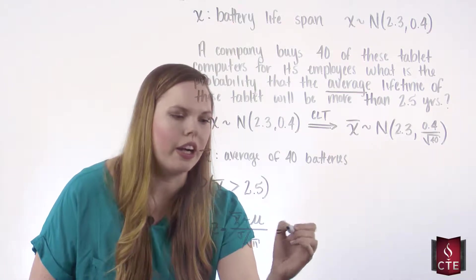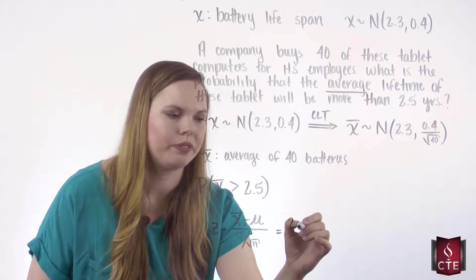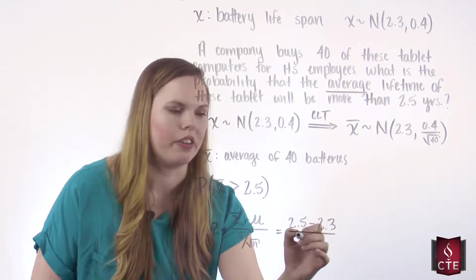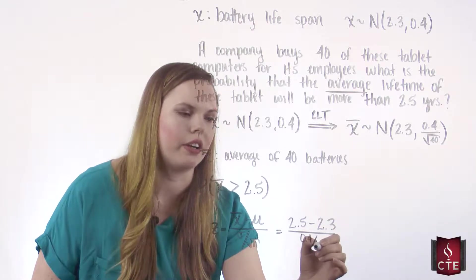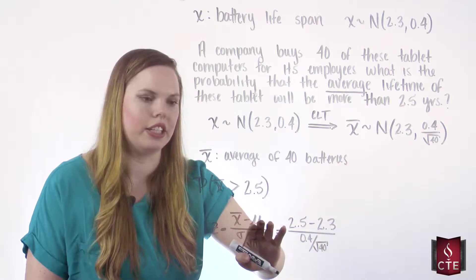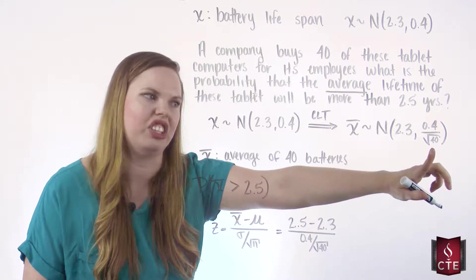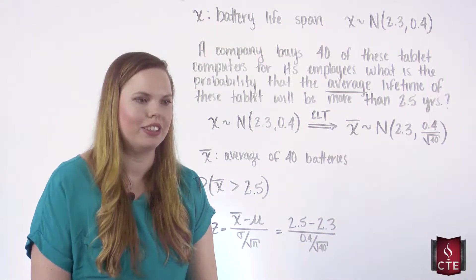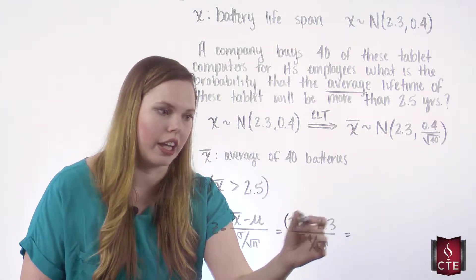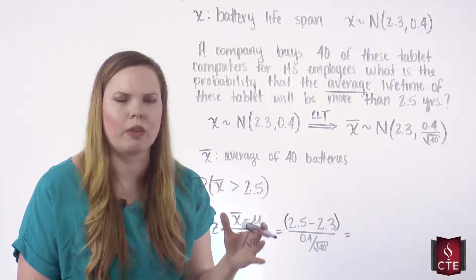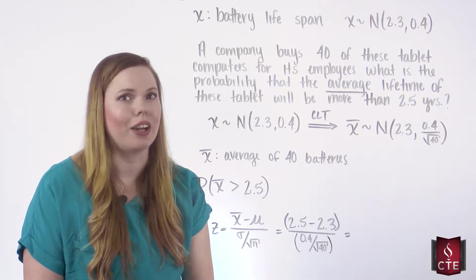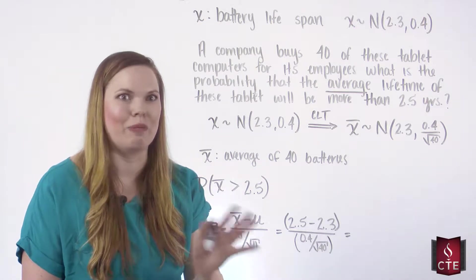Plugging in values: X-bar is 2.5, mu is 2.3, and sigma over the square root of N is 0.4 divided by the square root of 40. Make sure that if you're putting this in your calculator you are using parentheses — put the top and the bottom in parentheses, otherwise you're going to get a wrong Z score and mess up your probability. With a division bar, parentheses are always assumed.